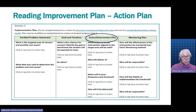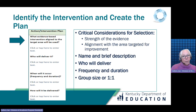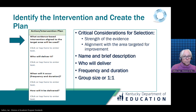The next step in the problem solving process is to select an intervention that aligns with the target areas of concern and develop the plan for how the intervention will be implemented. The intervention selected must be supported by evidence of positive and statistically significant effects on student outcomes and should be aligned with the area targeted for improvement. The intervention plan will include the name and brief description of the intervention, the name of the interventionist, the frequency and duration, and the intervention group size.